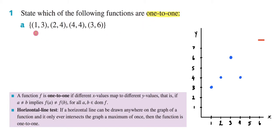And here in A, we've been given a set of coordinates. Now the very first question we need to ask ourselves is what does it mean to be one-to-one? Well right here we have a definition which tells us a function f is one-to-one if different x values map to different y values.